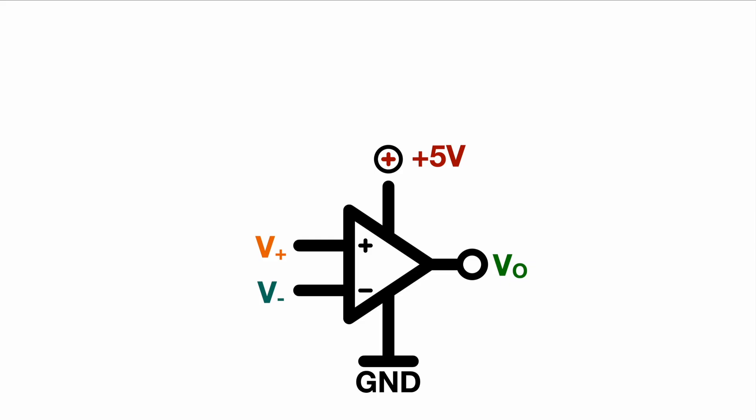So in our case the low signal will be ground and the high signal will be 5 volts because what we're essentially doing is we're putting the op-amp into overdrive so we will push it to amplify to the absolute maximum which will be in our case the 5 volts or the absolute minimum which will be ground.